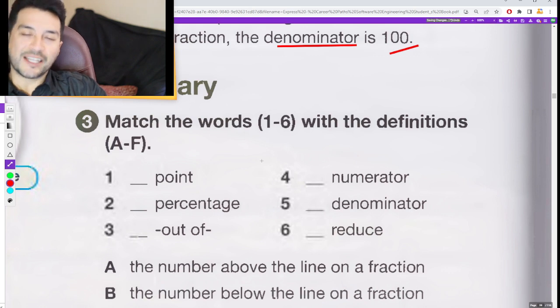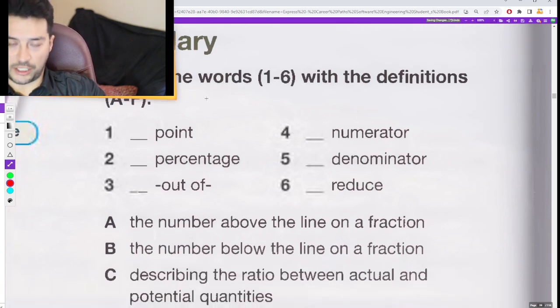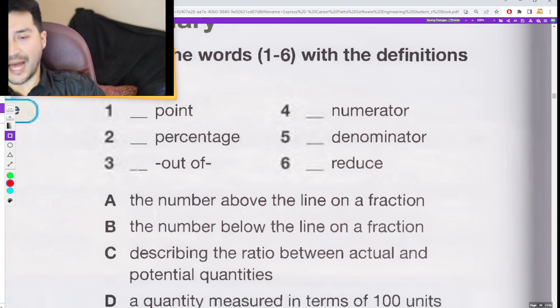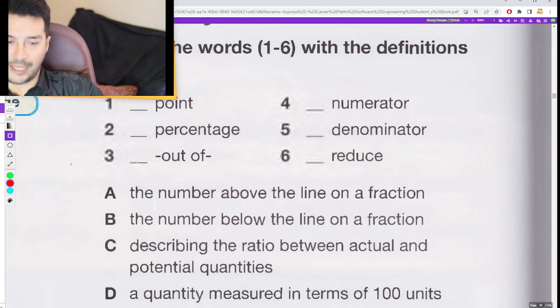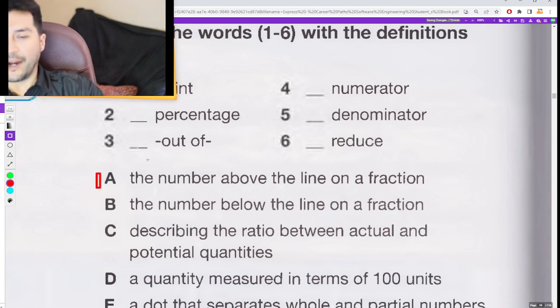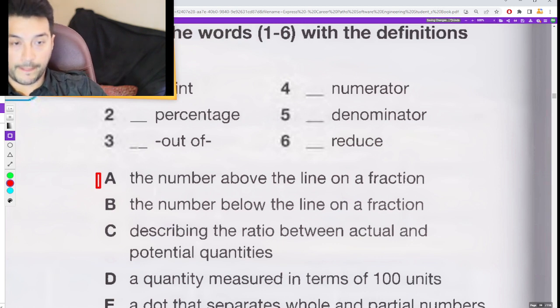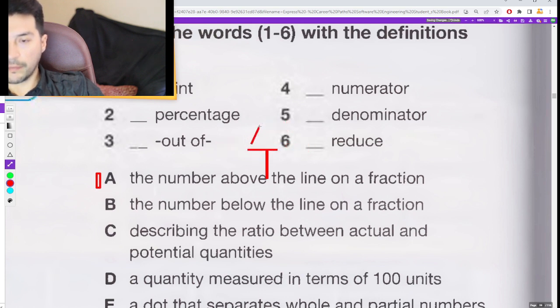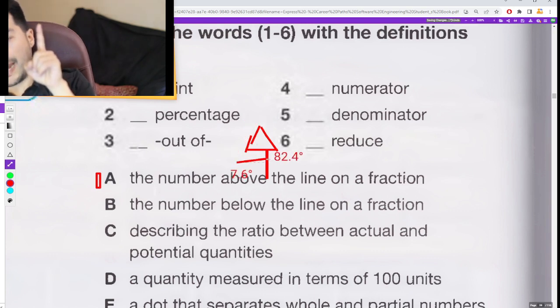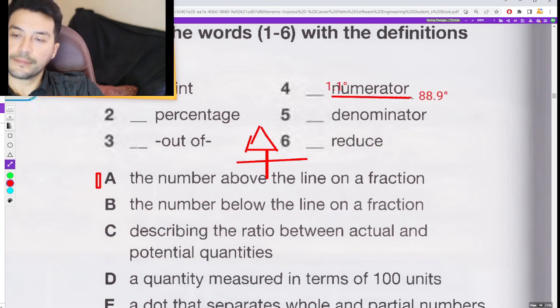Alright, vocabulary. Match the words one through six with the definitions A through F. We got point, percentage, out of, numerator, denominator, and reduce. Este es como el diccionario, literalmente tenemos las definitions. Letter A: The number above the line on a fraction. Above the line. ¿Conoces la preposición above? Above the line. Numerator.